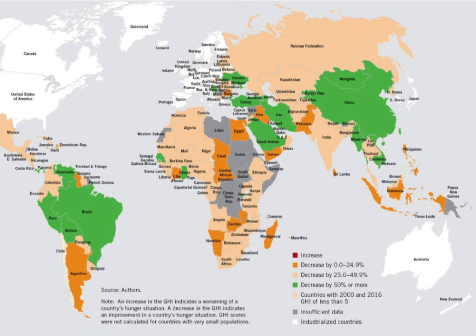Country rankings are determined as per the Global Hunger Index. Countries are ranked according to 2018 GHI scores. Countries that have identical 2018 scores are given the same ranking — for example, Bulgaria and the Slovak Republic are both ranked 16th.